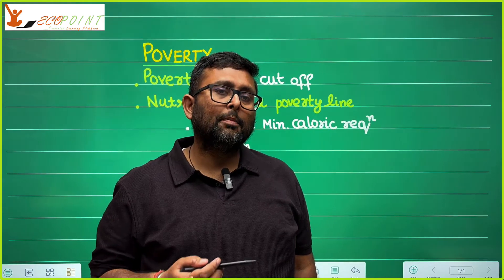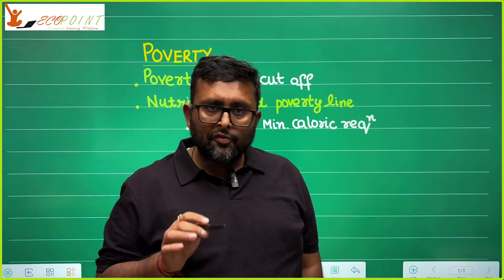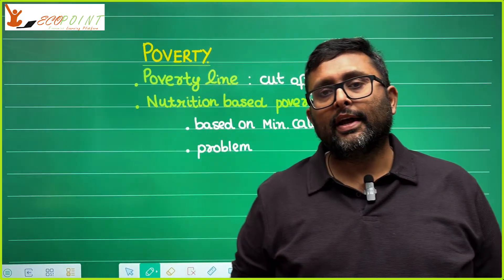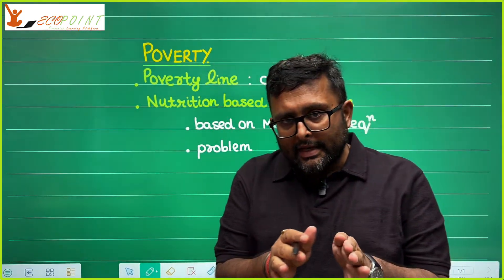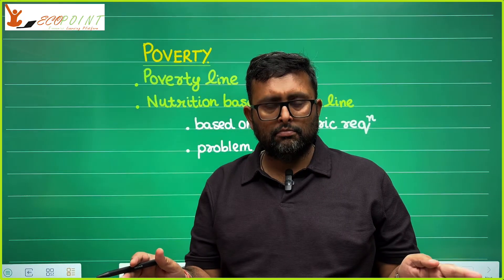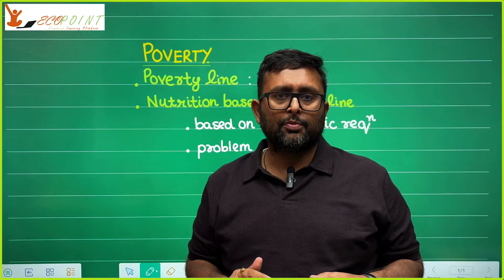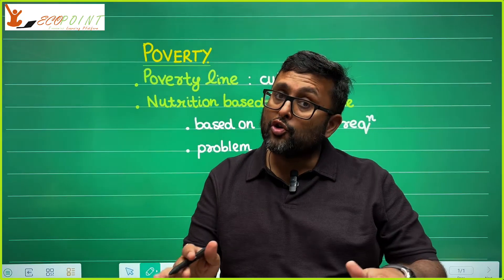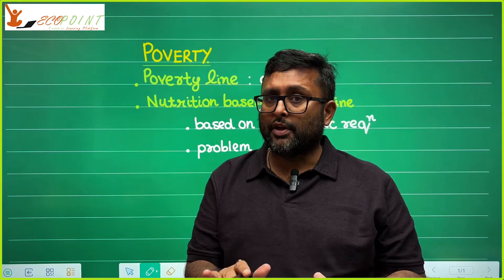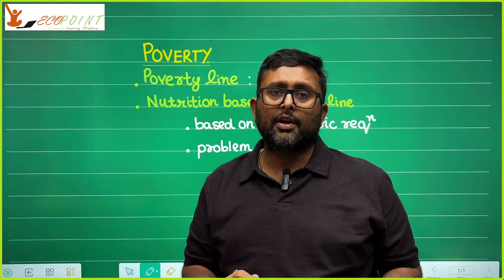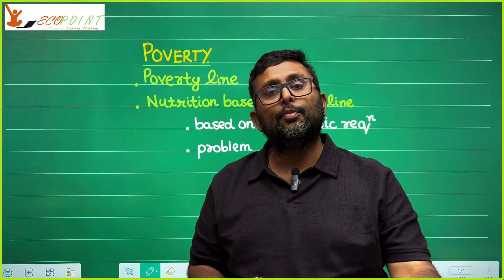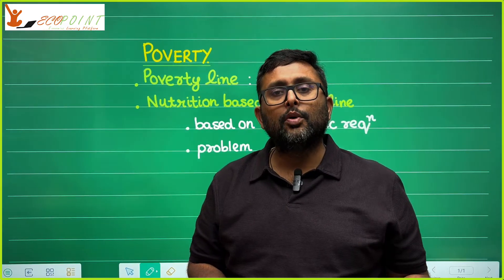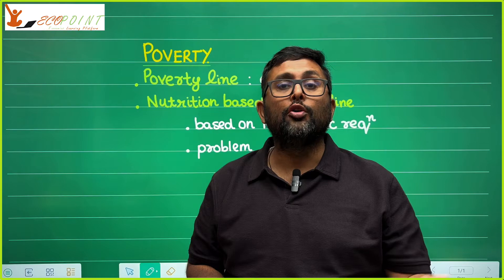Let us start our discussion about poverty. The first thing is the poverty line. Poverty line is that threshold level of income — if you are not earning that threshold level of income, you are below that threshold level, you are considered to be poor. If you are earning above that threshold level of income, then you are considered to be non-poor.